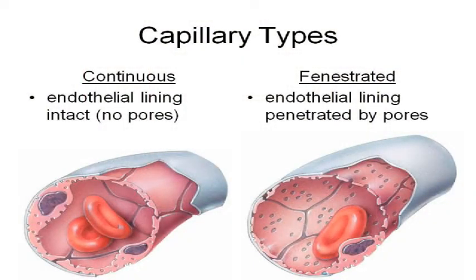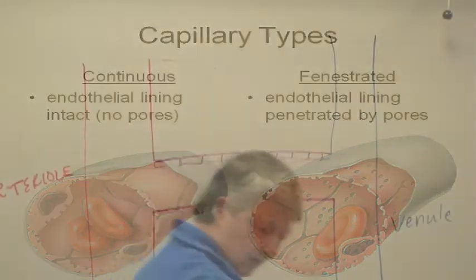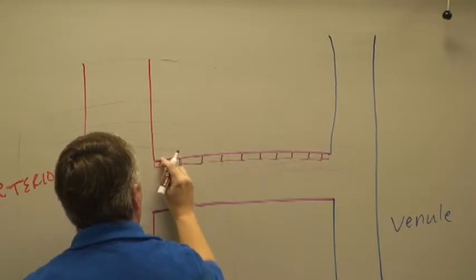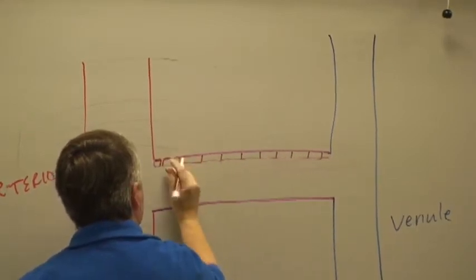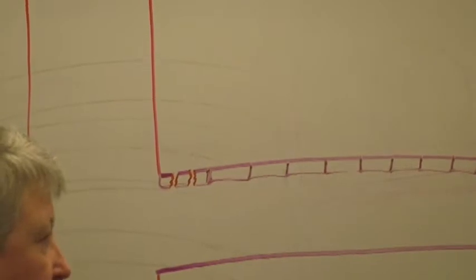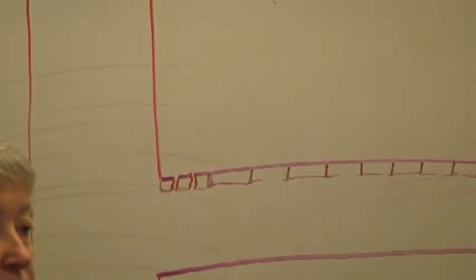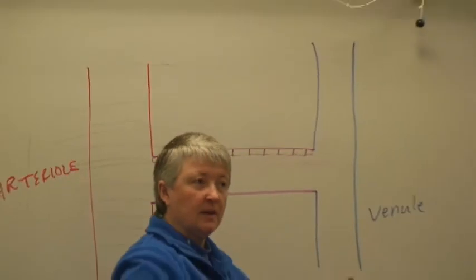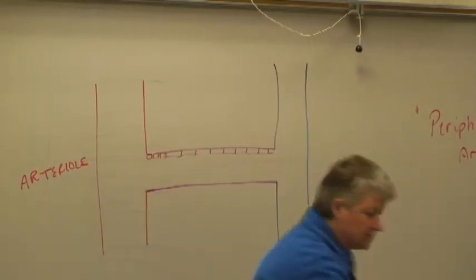In certain areas of the body, you have what are called fenestrated capillaries. The fenestrated capillaries have little short passageways — which we call fenestrations, little pores — almost like little short T-tubules. So these capillaries are a little bit leaky, because there are certain parts of your body where they need to be leaky — where you need larger substances to be able to cross into or out of the bloodstream. We'll talk about some of those areas a little bit later.